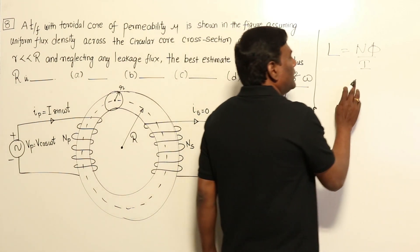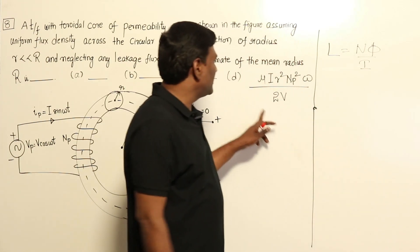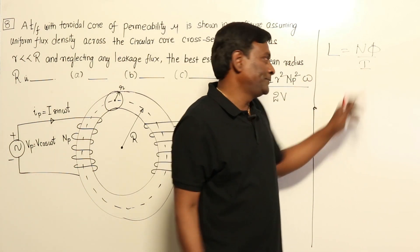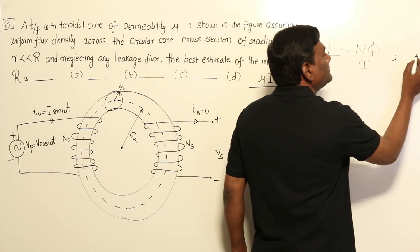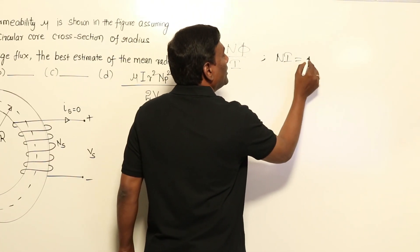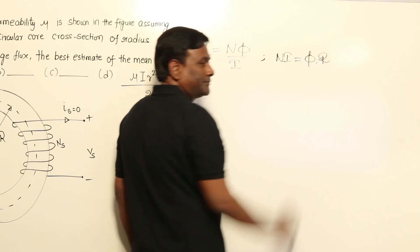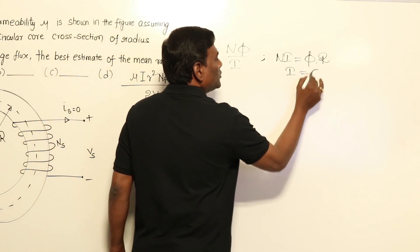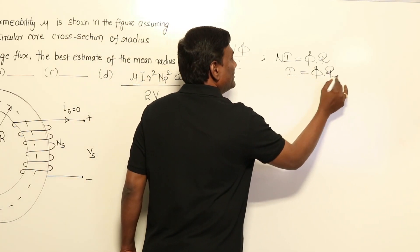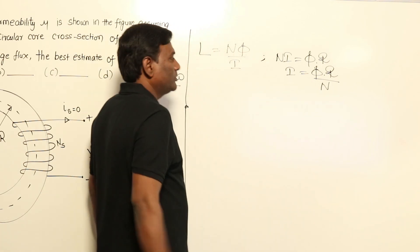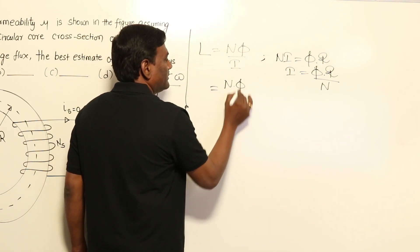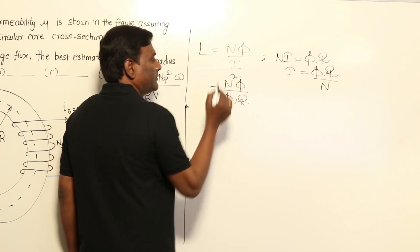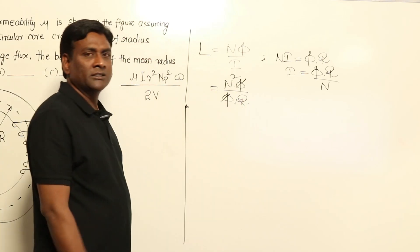What is i? We know that Ni, the MMF, is going to be flux φ multiplied by reluctance. So i is φ times reluctance divided by number of turns. Therefore L = N × φ / (φ × reluctance / N) = N²/reluctance.